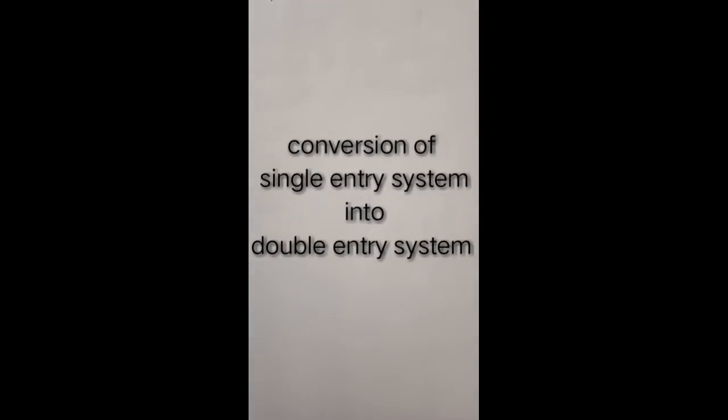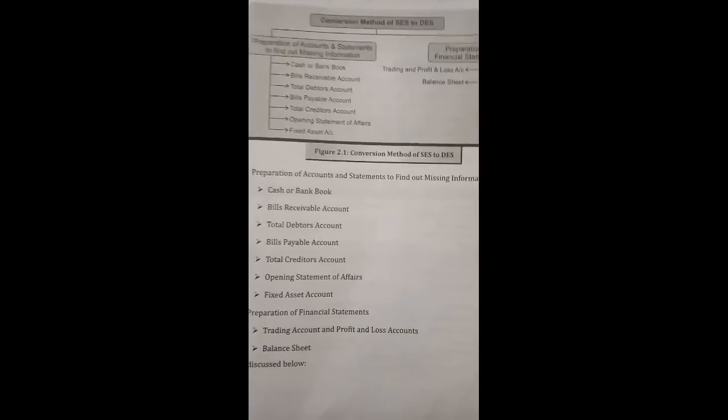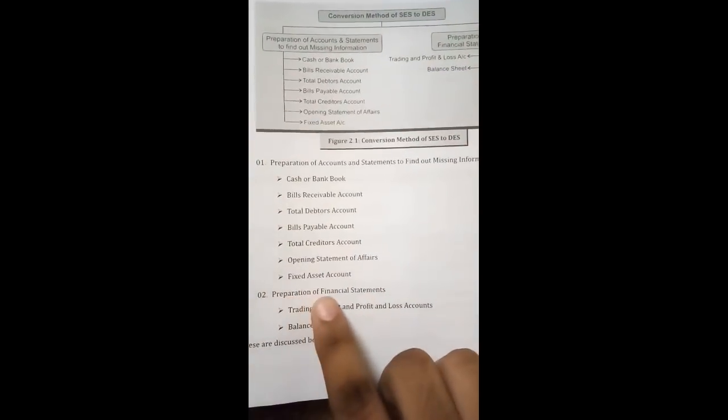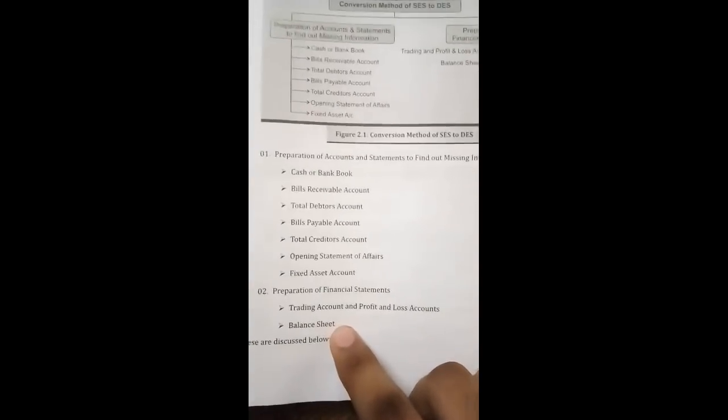To convert a single entry into a double entry, we have to prepare: BR account, total debtors account, BP account, total creditors account, opening statement of affairs, fixed asset account, then cash and bank book. The second stage is preparation of the final statement — trading account, profit and loss account, and last year's balance sheet.